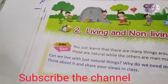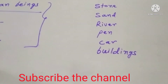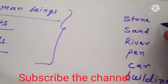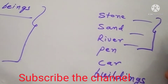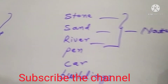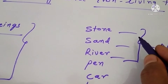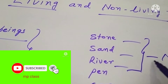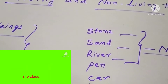Other natural things like stones, sand, and rivers — see a stone. These are the natural things. But they have no growth. Can a stone grow? No. Can sand grow? No. Can a river grow? No. These are the natural things, but they have no growth.